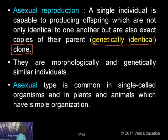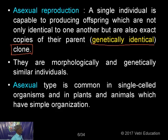In sexual reproduction, clones cannot be produced; individuals are morphologically and genetically similar. Asexual reproduction is common in single-celled organisms such as Euglena, Paramecium, and lower plants like Chlamydomonas, Volvox, Eudorina, and yeast. In all these organisms, asexual reproduction takes place.